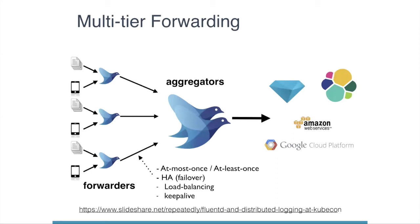Fluentd supports a multi-tier model with its own forwarding protocol. The Fluentd forwarding protocol supports two delivery semantics — at-most-once and at-least-once — as well as high availability and load balancing for multiple aggregators. This multi-tier model is mainly for high-traffic environments. If you are interested in this model, check the link on this page.